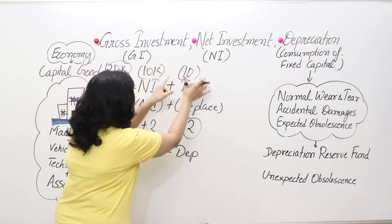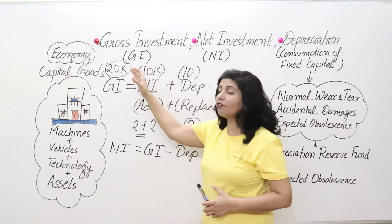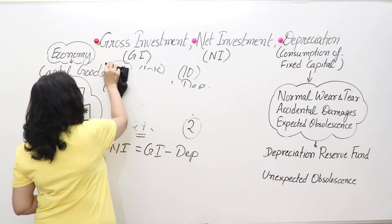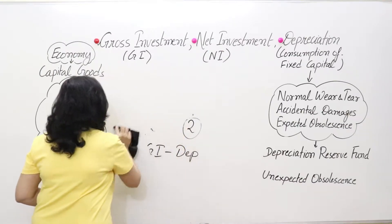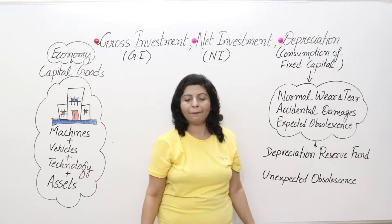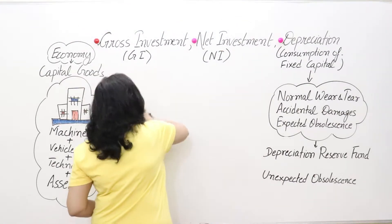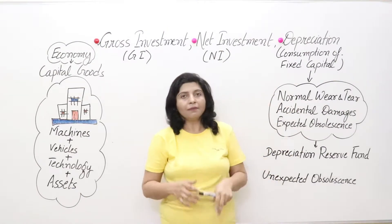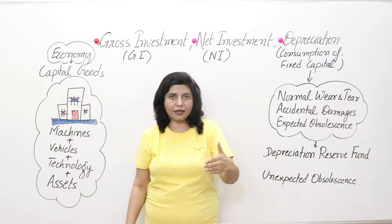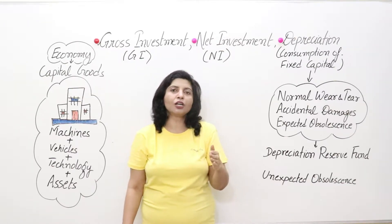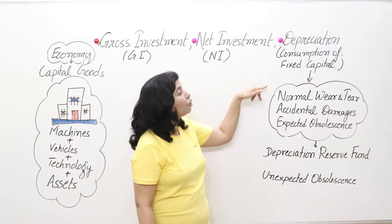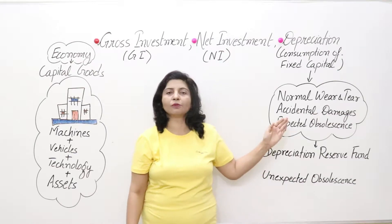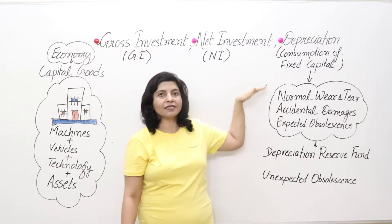Depreciation is all bad happening to your machines or capital goods. Number one, depreciation is known as consumption of fixed capital — when we use our capital goods year after year for 10, 15, or 20 years, after that they become unusable or worn out due to normal wear and tear. That means after long-term use these machines become old or unusable.